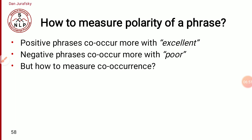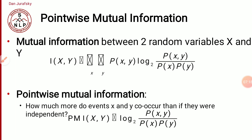Now, how to measure the polarity of a phrase: if a phrase is positive, its co-occurrence with the word 'excellent' will be higher; if negative, its co-occurrence with the word 'poor' will be higher. To measure co-occurrence, we use Pointwise Mutual Information (PMI). PMI between two random variables X and Y is defined as the summation over joint probability of X and Y, times log base 2 of the joint probability divided by the independent probabilities of X and Y.